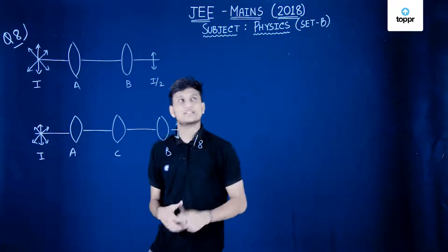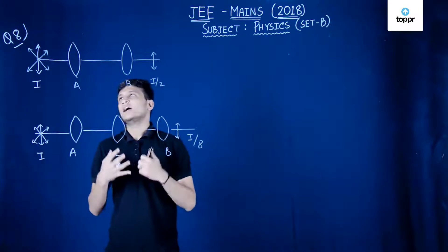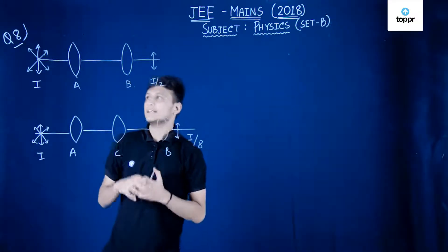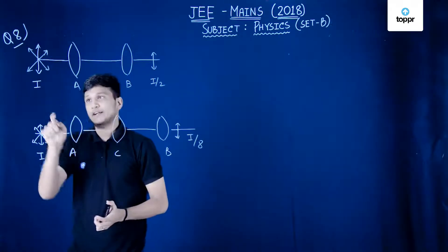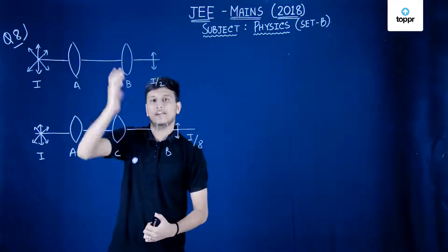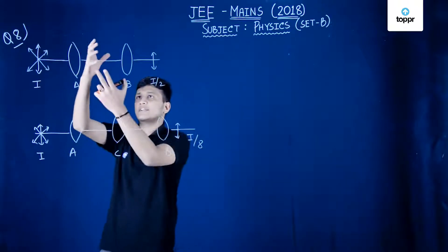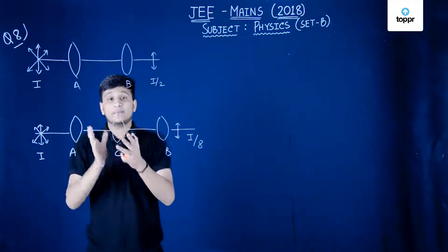Set B question number 8 of physics JEE Mains 2018. The question says that we have an unpolarized light of intensity I, then we have a polarizer A so that intensity would be something.